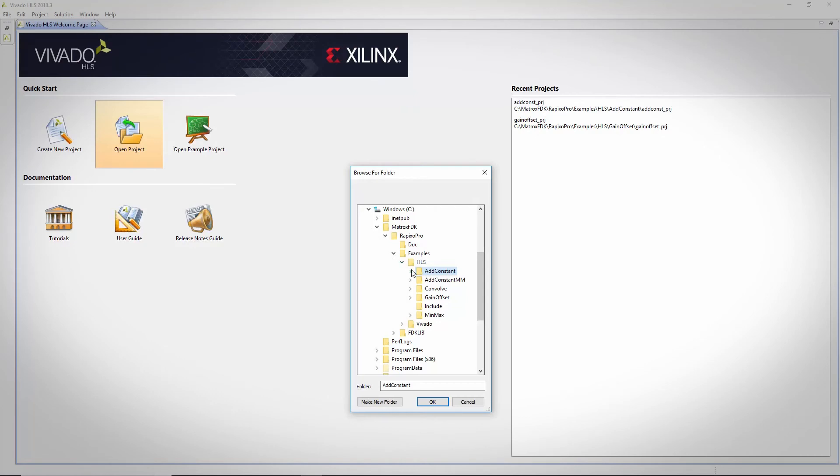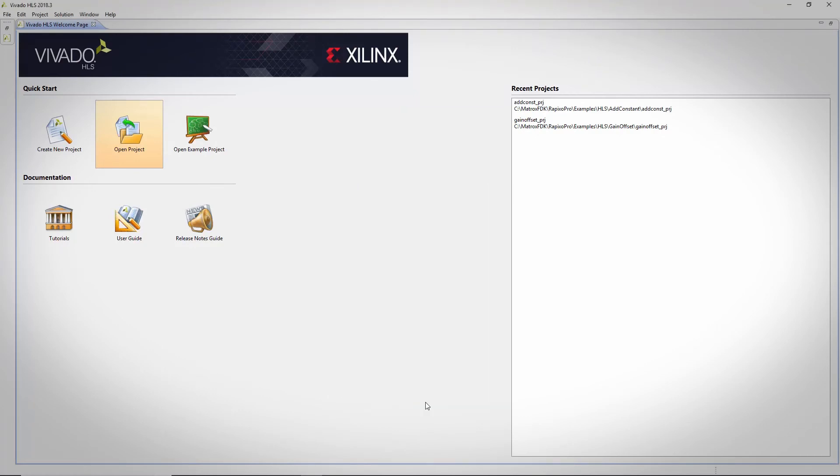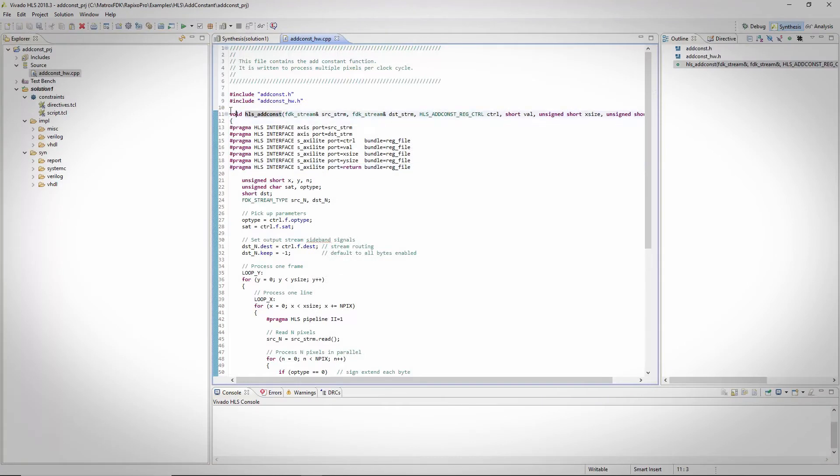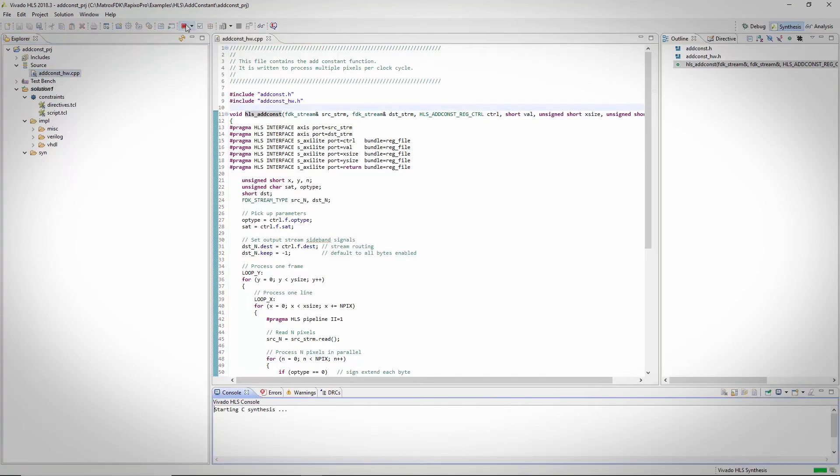Finally, can you give us some more information about how the Matrox FDK is used to develop a new processing unit? The first step is to implement the algorithm in HLS code using C or C++. Matrox Imaging provides documentation and several examples to help with this. Once this is done, the algorithm can be synthesized into an IP block or processing unit using Vivado HLS.